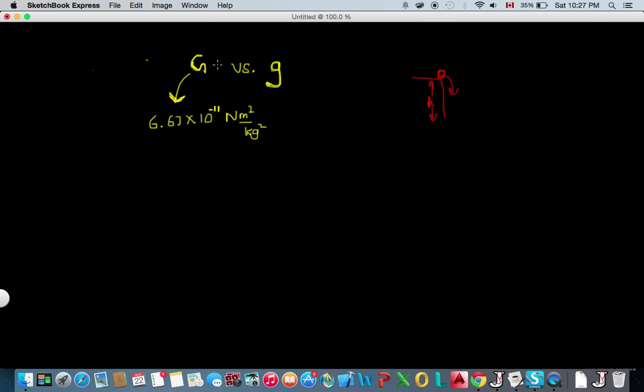So what is the difference between these two besides the obvious, and where do they come from? We know that the force of gravity can be expressed by Newton's law of universal gravitation. In this case, it would be the universal constant G times the mass of the Earth times the mass of some object—let's say this ball of mass m—divided by r squared, where r is this h here.